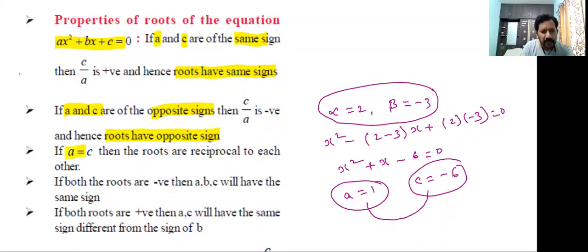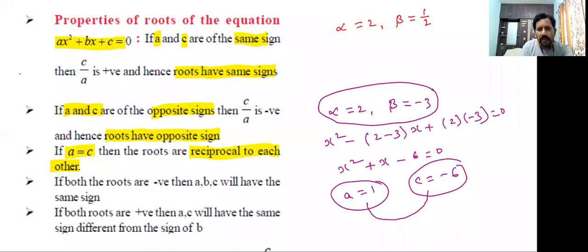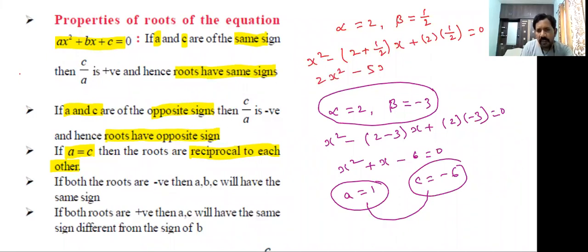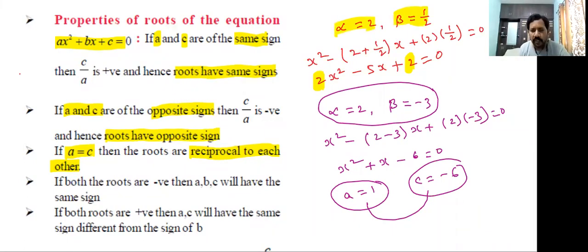Third property: if a = c, then the roots are reciprocals of each other. For example, if alpha = 2 then beta = 1/2 — both roots are reciprocals. Forming the quadratic equation gives 2x² - 5x + 2 = 0. Observe that a = 2 and c = 2, i.e., a = c, confirming that the roots are reciprocals of each other.